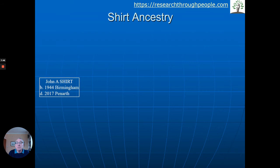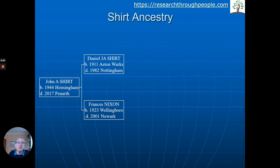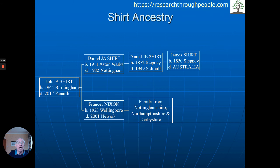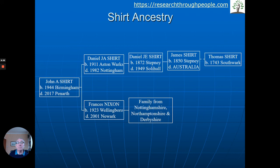More often, people come to us, we trace back in time, and we don't know what's going to happen — but there are almost always surprises. Here's a quick example: John Shirt, born in Birmingham in the Midlands, went to live in Wales. His dad was born near Birmingham as well; his mother was from Northamptonshire. Going back, her family was very much from the Midlands — Nottinghamshire, Northamptonshire. On the Shirt side, they were from the East End of London, Stepney. There's a James who went to Australia — quite a story there. We finally got back to Southwark on the south side of the Thames, tracing back almost 300 years. That's what family history is about — going back in time and discovering the different stories that build up.